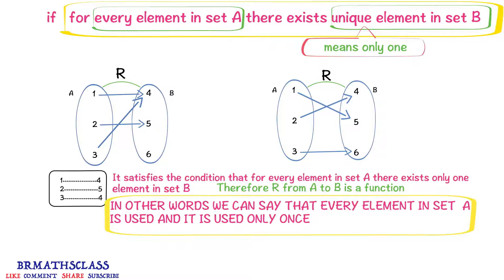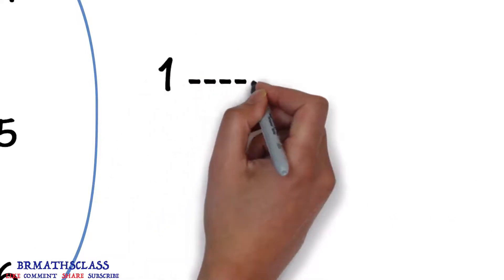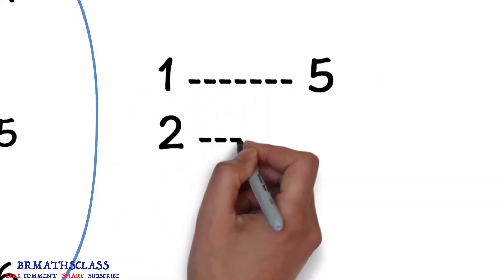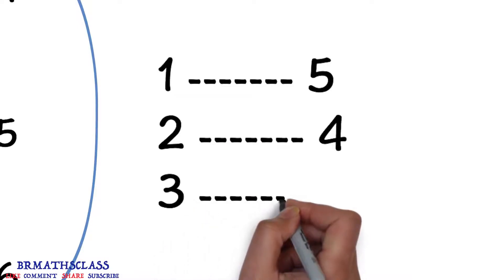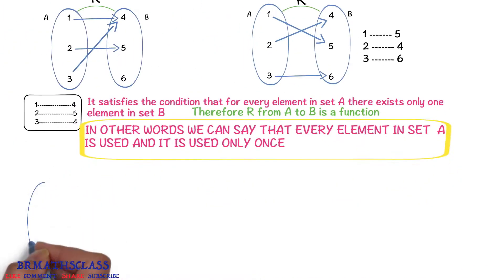Alternatively, for every element in set a, there exists only one element in set b: for 1, only one element; for 2, only one element; for 3, only one element. For every element in set a there exists only one element in set b, so r is a function from a to b.